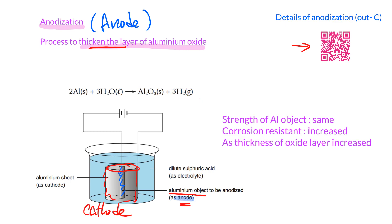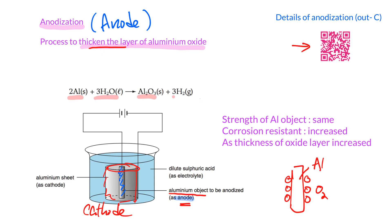In the anodization process, oxygen forms on the surface of the aluminium and reacts to form aluminium oxide. The overall equation is: aluminium reacts with water to form aluminium oxide and hydrogen. The goal of this process is to thicken the layer of aluminium oxide on the surface of the aluminium object.